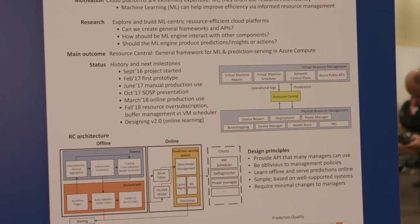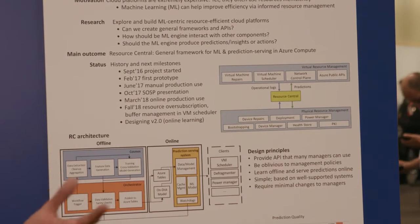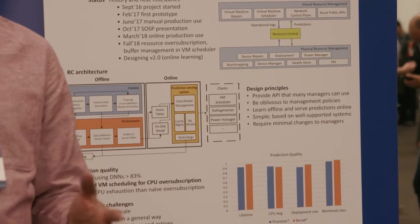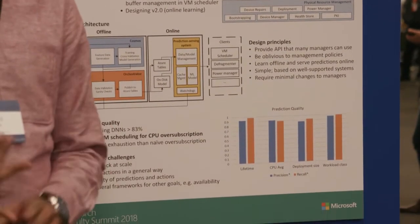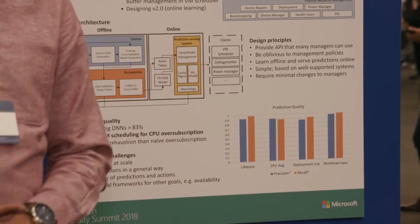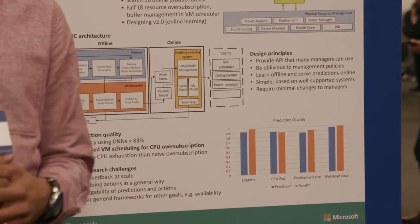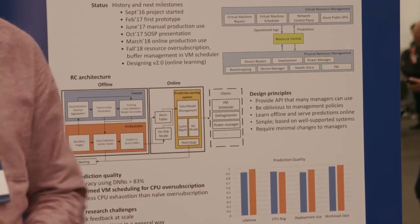Resource Central is a general platform for collecting telemetry, learning about the prior behaviors of VMs and servers, and when requested, it can produce predictions of the future behavior.